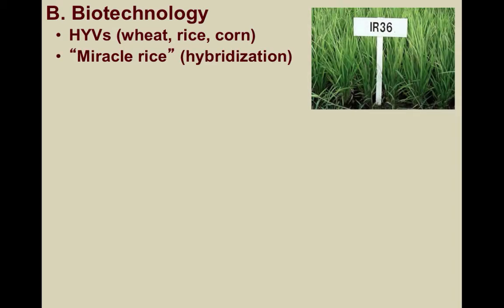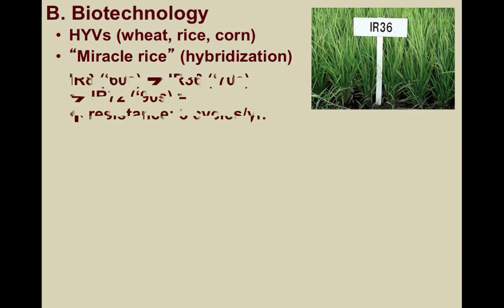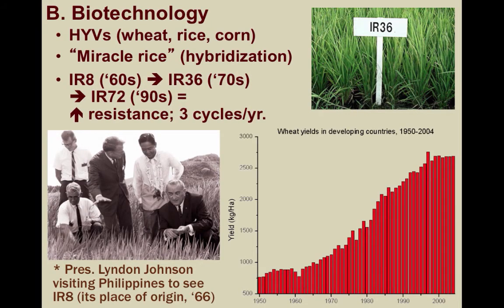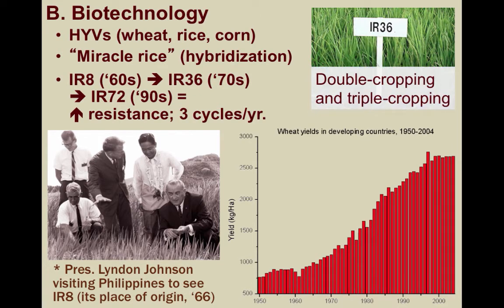IR-8, standing for International Rice Version 8, was a product of extensive hybridization. It required the use of fertilizers and pesticides but produced substantially higher yields than previous rice — one study claimed it was 10 times more productive. IR-36 was available by the 1970s and IR-72 was introduced in the 1990s. Today this rice has resistance against around 15 pests and can produce around 3 harvests a year on the same land, referred to as triple cropping.